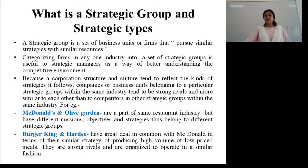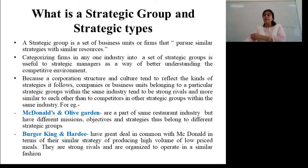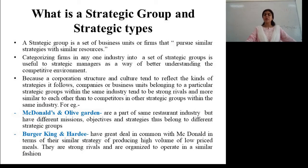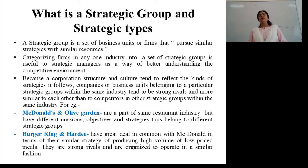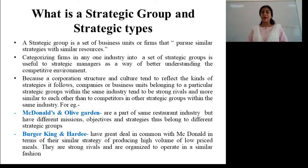McDonald's and Olive Garden both belong to the restaurant industry, but they differ in that their mission, objectives, and strategies are different because they follow different strategic groups. Similarly, Burger King and Hardee's have a lot in common with McDonald's in terms of the similar strategy of producing high volumes of low-priced meals. They are organized to operate in a similar fashion, giving tough competition to McDonald's, as both are equipped with providing meals at low cost with a different variety.